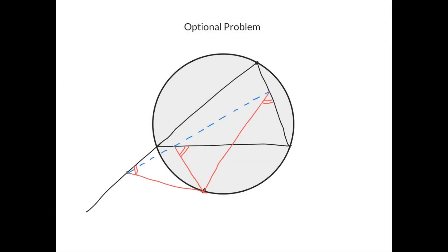The optional problem is called the generalized Simpson line for a triangle. Suppose we have a triangle and we take a point on its circumcircle. But instead of taking perpendiculars, we choose an angle, and we choose a point on each side such that the angle formed equals the chosen angle. So this angle equals this angle equals this angle. We need to prove that these three points lie on a straight line.